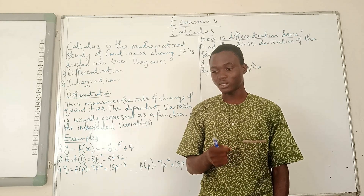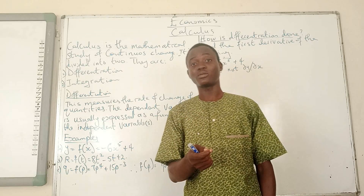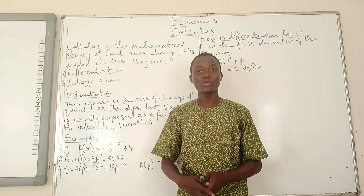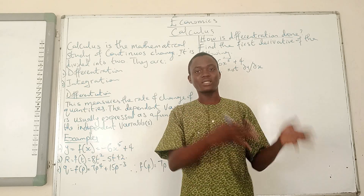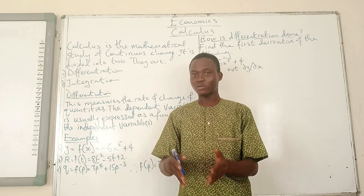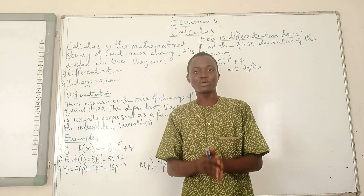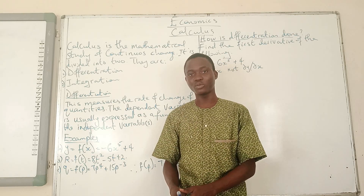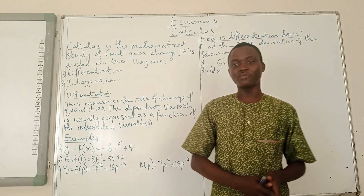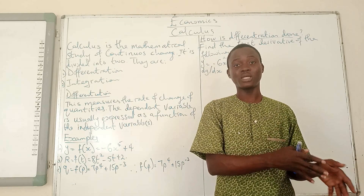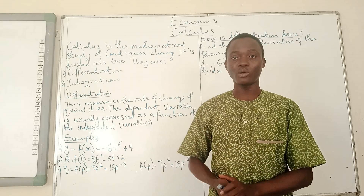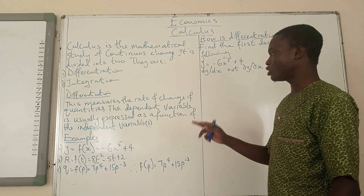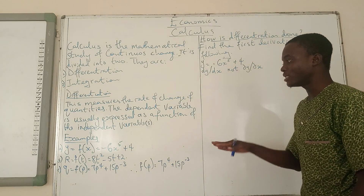For instance, if I talk about the demand function, an increase in price will lead to a reduction in quantity demanded, other things being equal. Price is the one affecting quantity — so price there is the independent variable. Quantity demanded is the dependent variable because its value depends on the behavior and the way at which price changes. The dependent variable is usually expressed as a function of an independent variable.